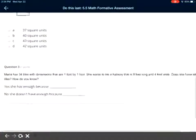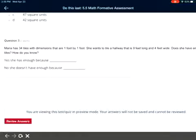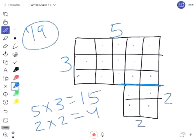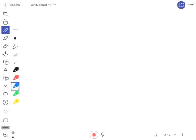Number three - this question is very similar to yesterday. Maria has 34 tiles with dimensions that are one foot by one foot. What that means is she has a bunch of tiles, and one foot by one foot is just like this - it's one foot long and one foot wide, and she has 34 of those.